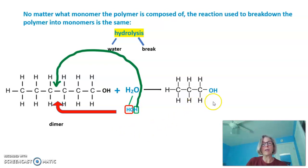That would produce a monomer with a hydroxyl on one end and the monomer that has the hydrogen from water on the other end. We have now reproduced our two monomers from that dimer in this hydrolysis reaction.